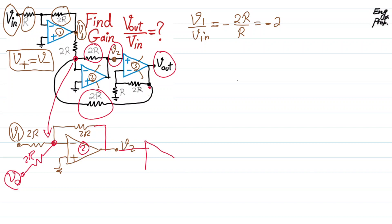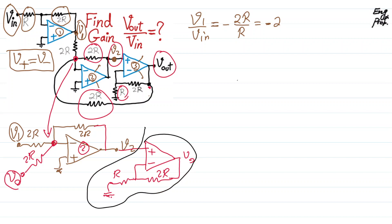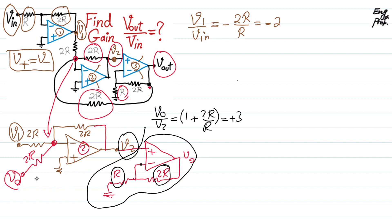Then V2 feeds into op-amp three in a non-inverting configuration, with a 2R feedback resistor and an R resistor to ground. The gain of this non-inverting amplifier is well known: Vout over V2 equals 1 plus 2R over R, which equals plus 3. So the gain from V2 to Vout is plus 3.